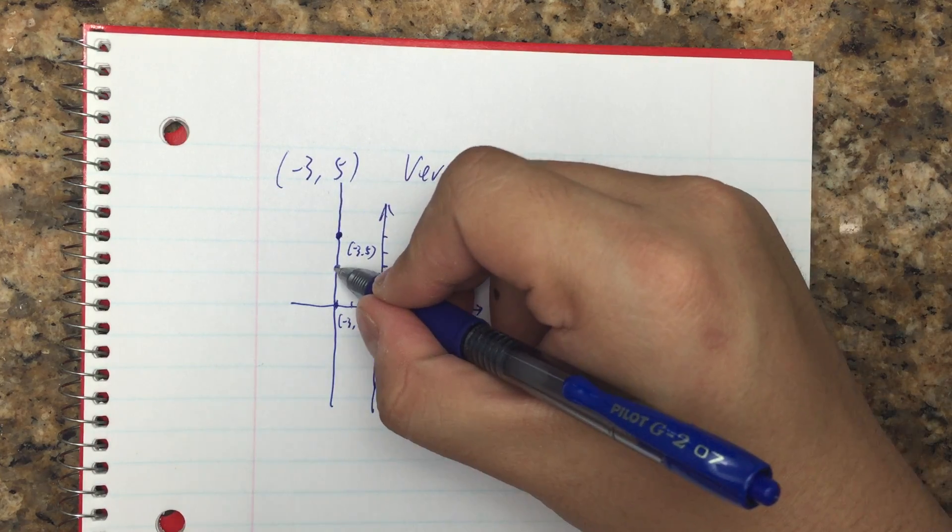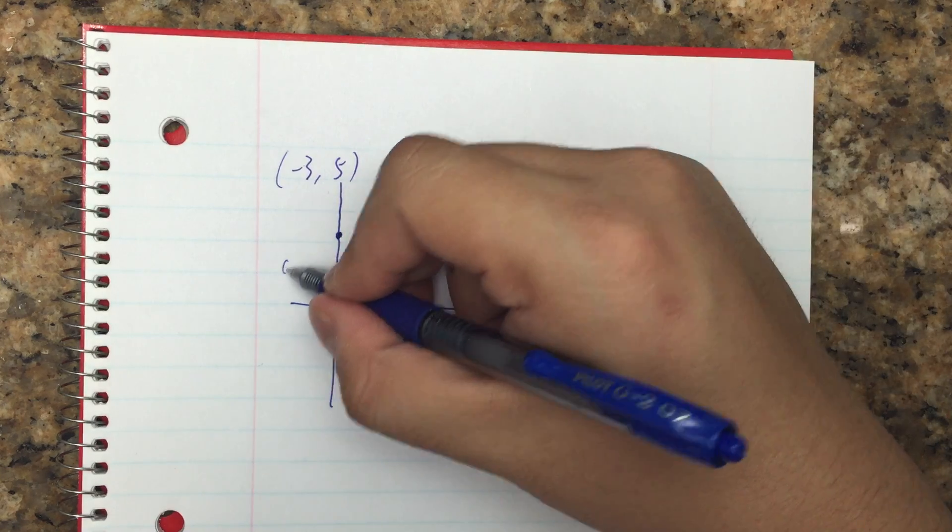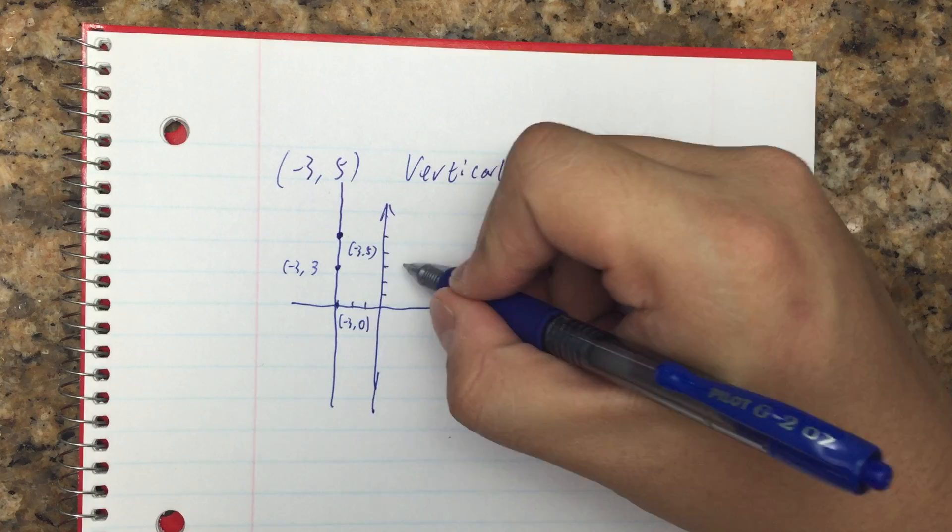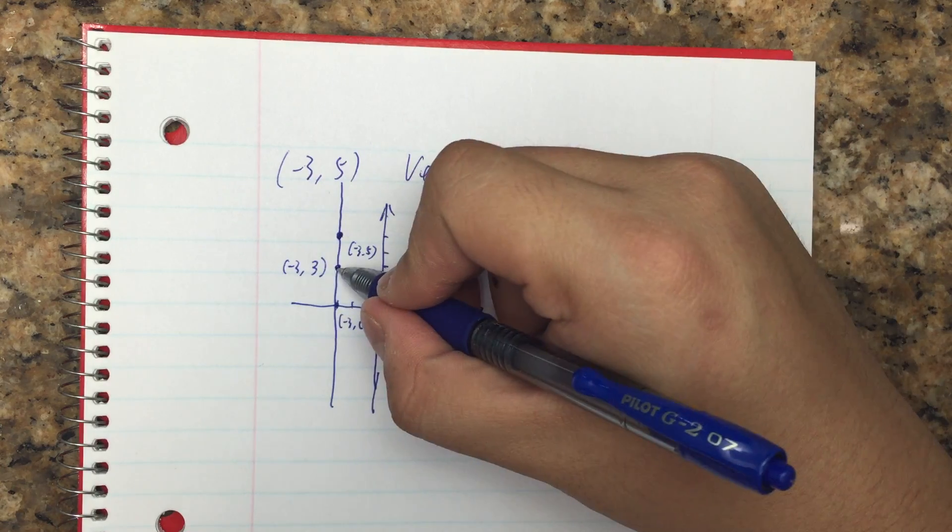Somewhere else, if I observe this point and read it, I get x value still -3. Y value could be 3 here, as I picked.